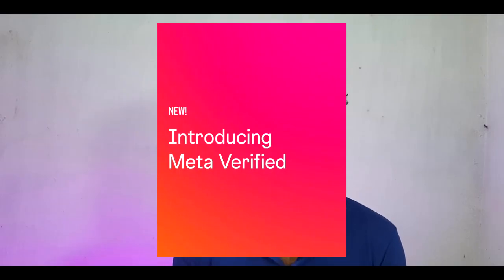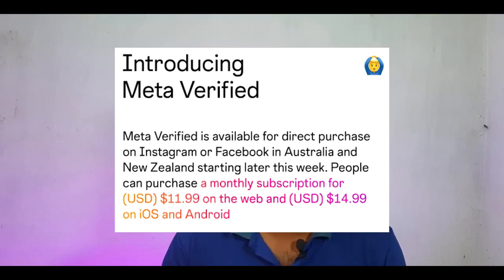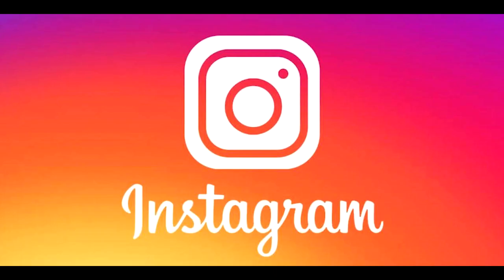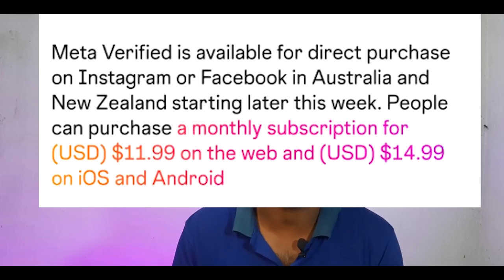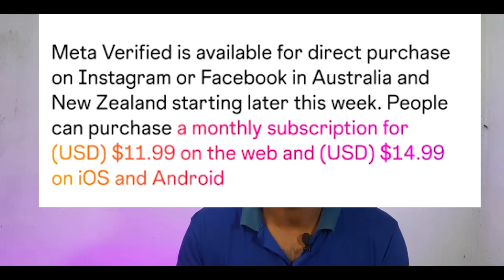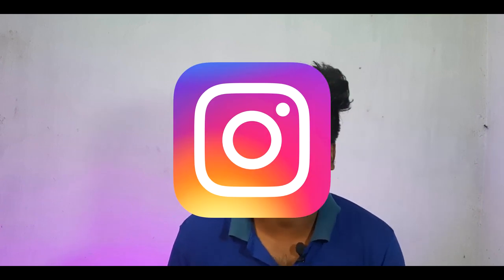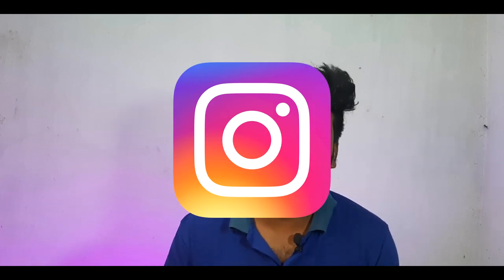You can know Instagram and Facebook. The Meta Verified account launched in Australia and New Zealand. The web version is $19.95, and there is also a $12.95 and $15.95 pricing for the app.